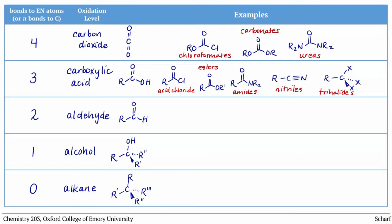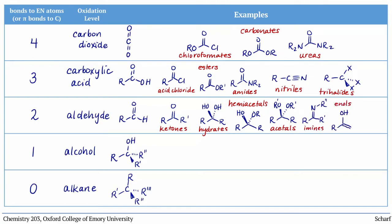At the aldehyde oxidation level are, of course, aldehydes and ketones, as well as hydrates, hemiacetals, and acetals. In addition, functional groups called imines and enols, neither of which you've encountered yet, fall into this category. Alkynes, because they contain carbons with two pi bonds to other carbons, are also in this group.